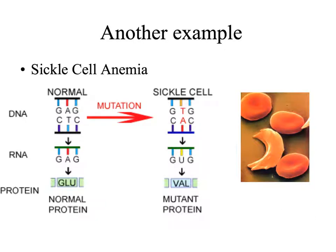Another example of a single point mutation that causes a huge problem is sickle cell anemia. There is a single base substitution in the DNA of people with sickle cell anemia. That one change causes a change in the amino acid sequence, and that mutant protein creates sickled red blood cells. The half-moon shaped red blood cells are not as good at doing their job — they do not transport as much oxygen, and they often cause clots in the blood vessels. These are two examples of how one small change in the DNA can cause huge problems.